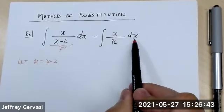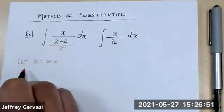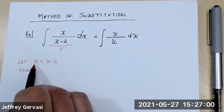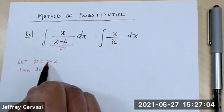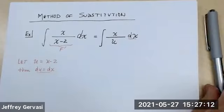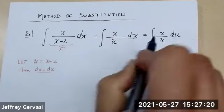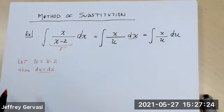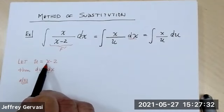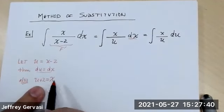Going back to where I said let U equal X minus two, if I take the differential of both sides, the differential of U is 1 DU, and the differential of X minus two is 1 DX. So this allows me to replace the DX symbol. DU and DX are the same thing. Then from U equals X minus two, I can solve for X — just add two to both sides — and I'll use that X to replace the numerator.